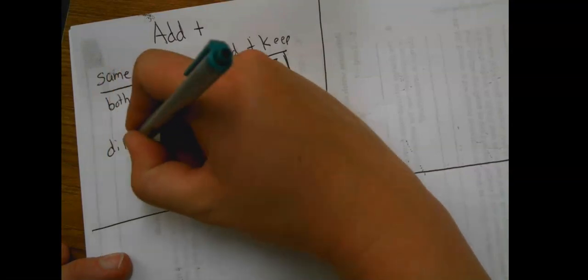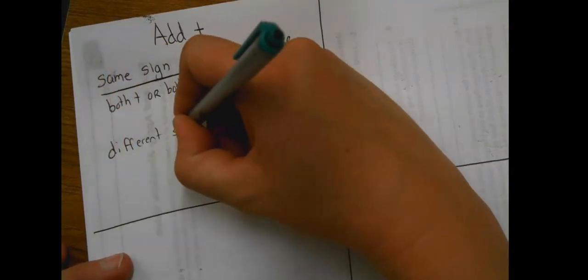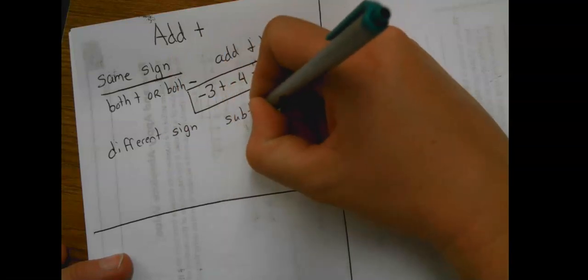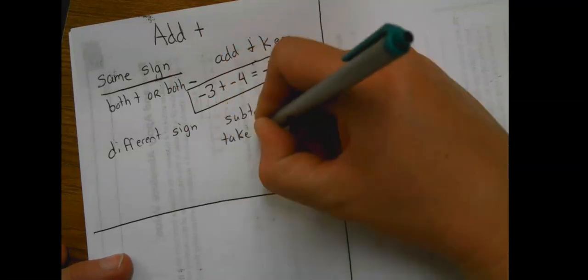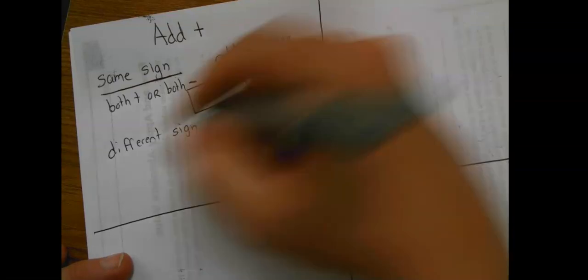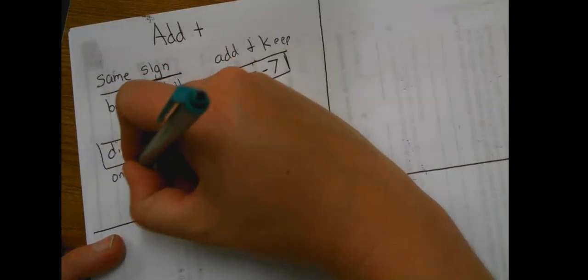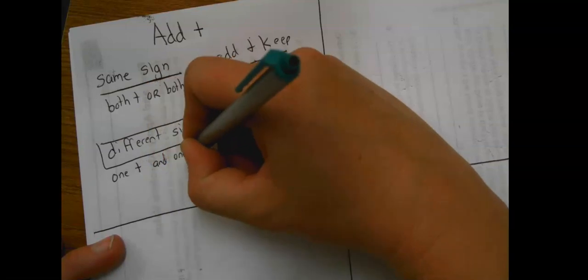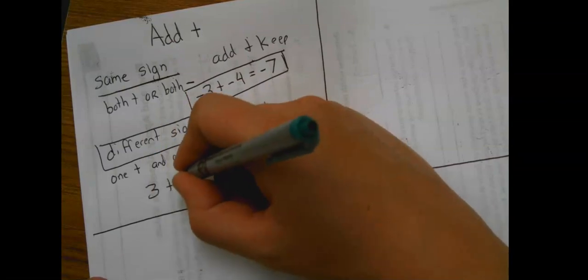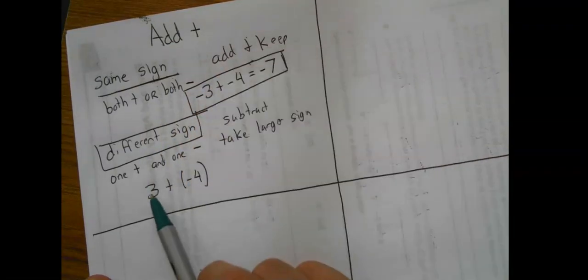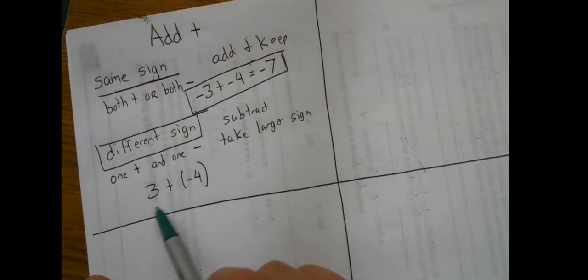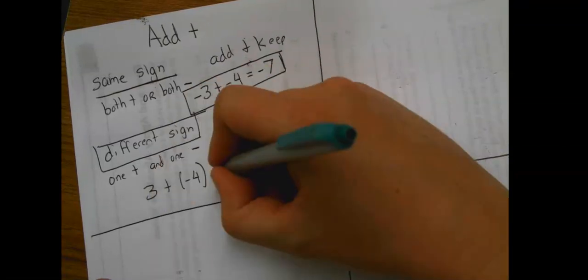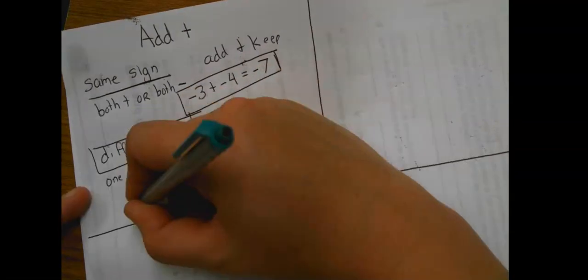Different signs means we're going to subtract and take the sign of the larger one. Take larger sign. So different sign, what does different signs mean? That means that one is positive and one is negative. So an example of that would be like three plus negative four. This is positive, this is negative, different signs. So we're going to subtract, negative four minus three is negative one.